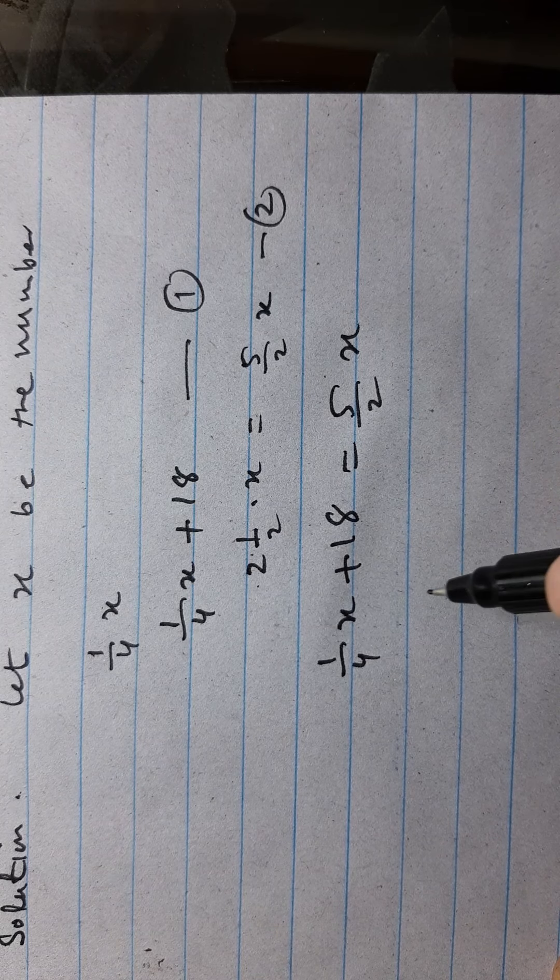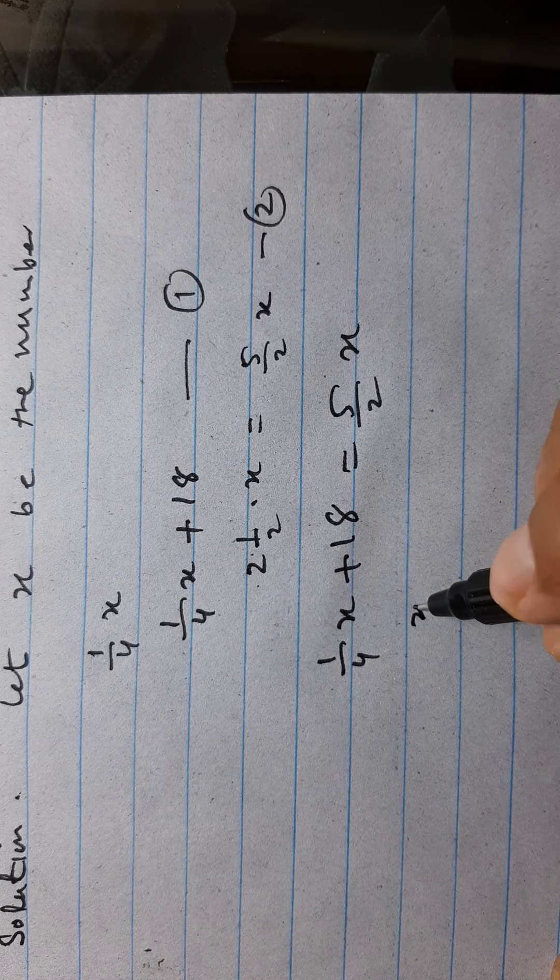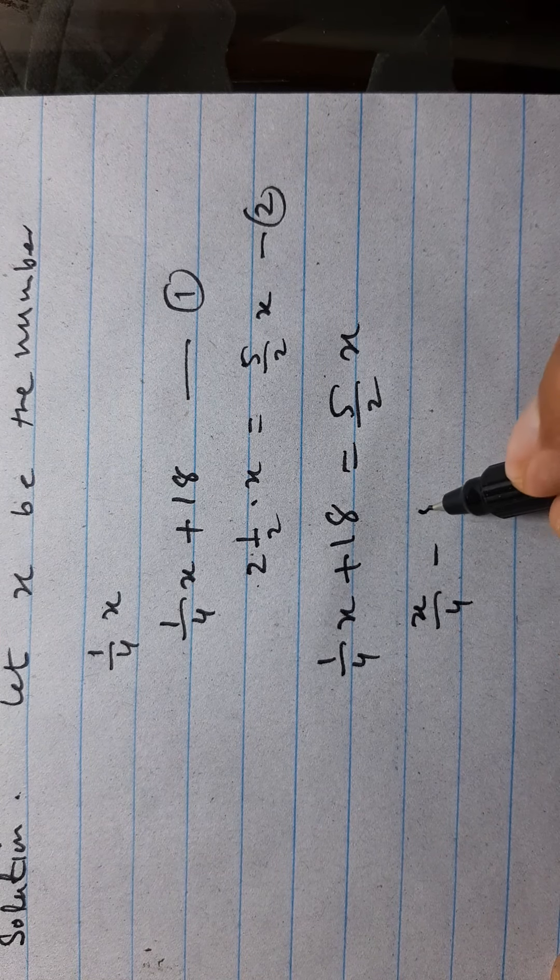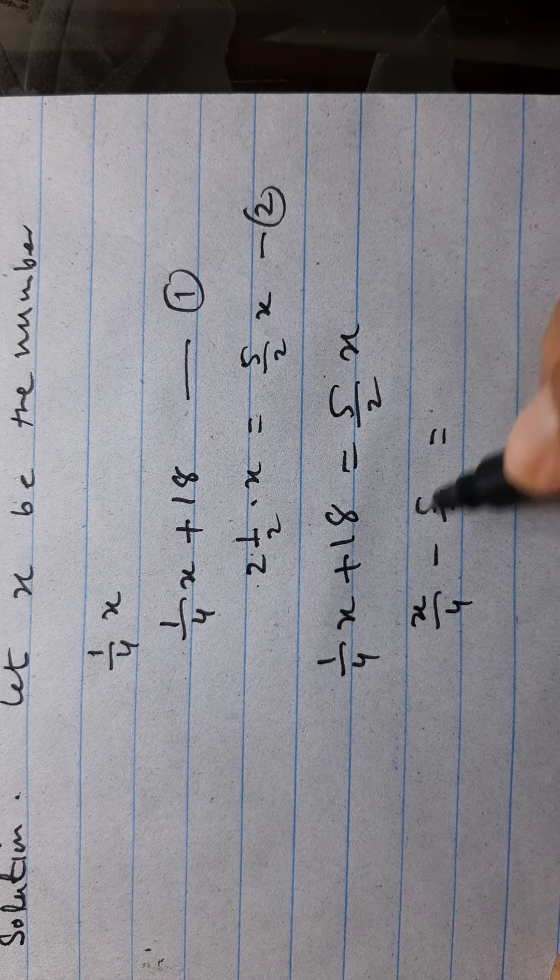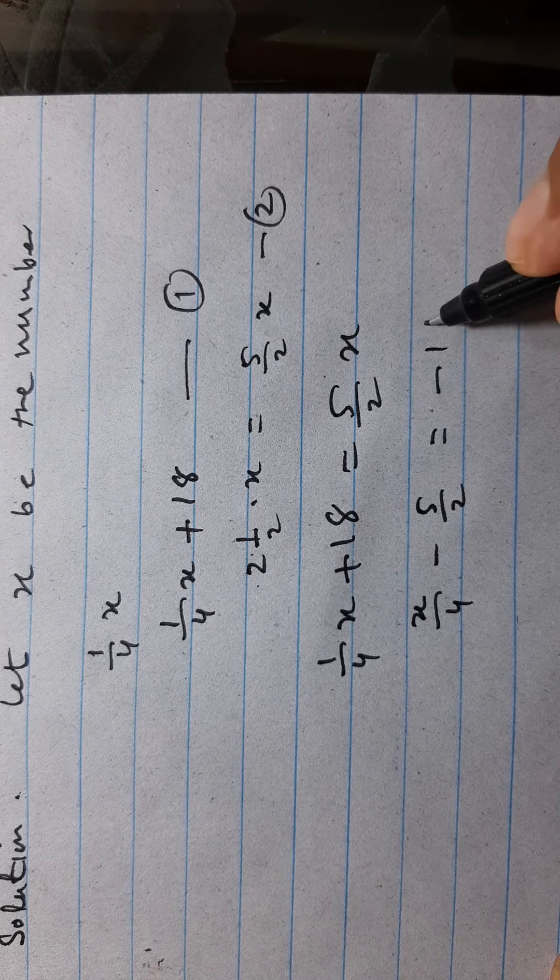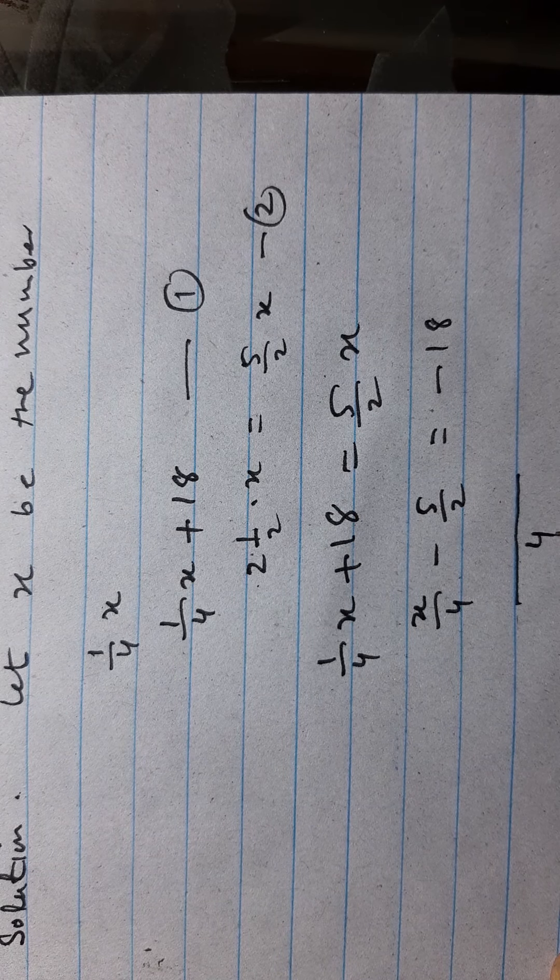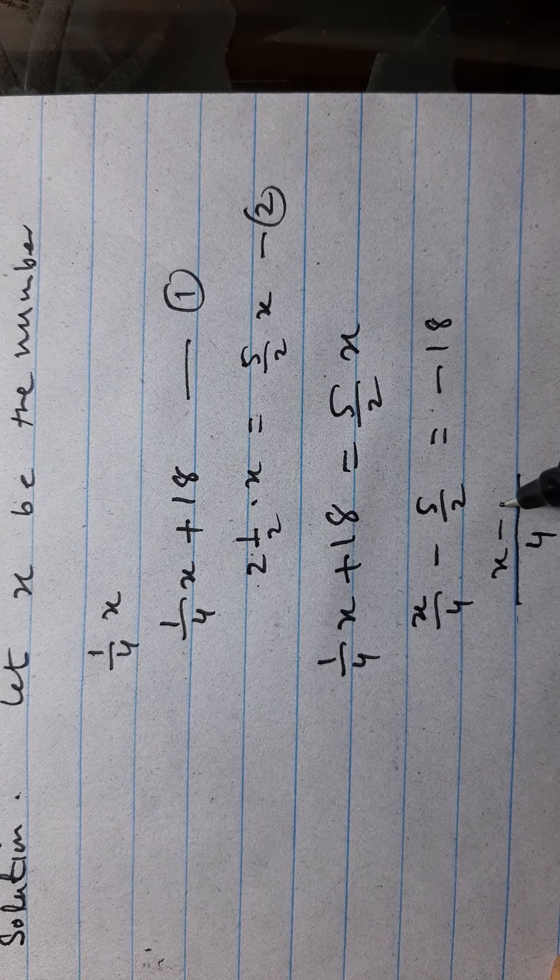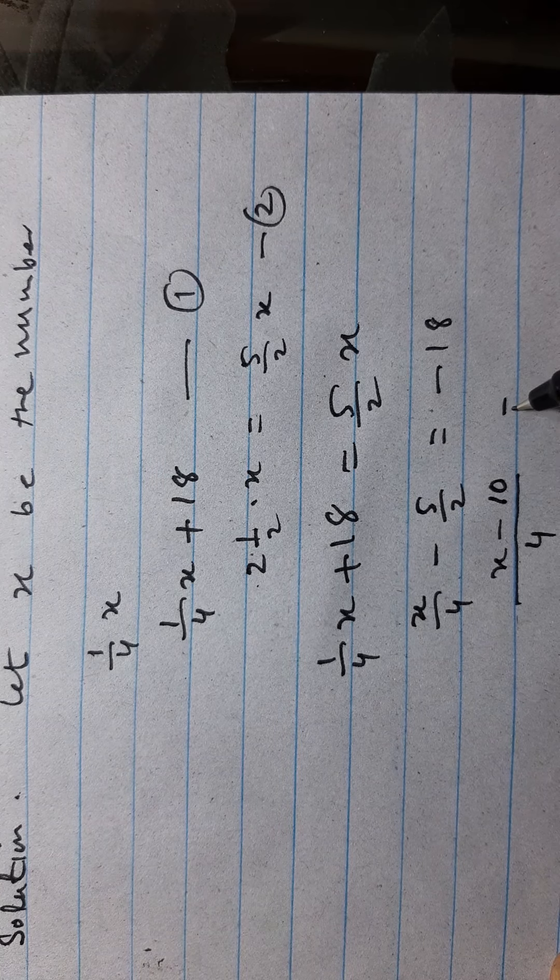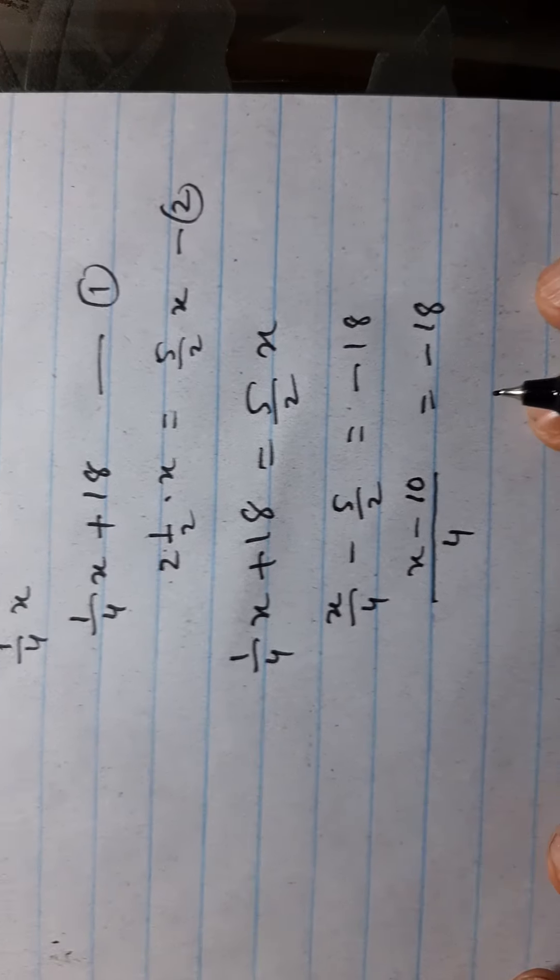Here we can write x upon four minus five upon two. We can transpose here, this is minus 18. And here we can take the LCM. LCM is four. Then x minus 10 is equal to minus 18.